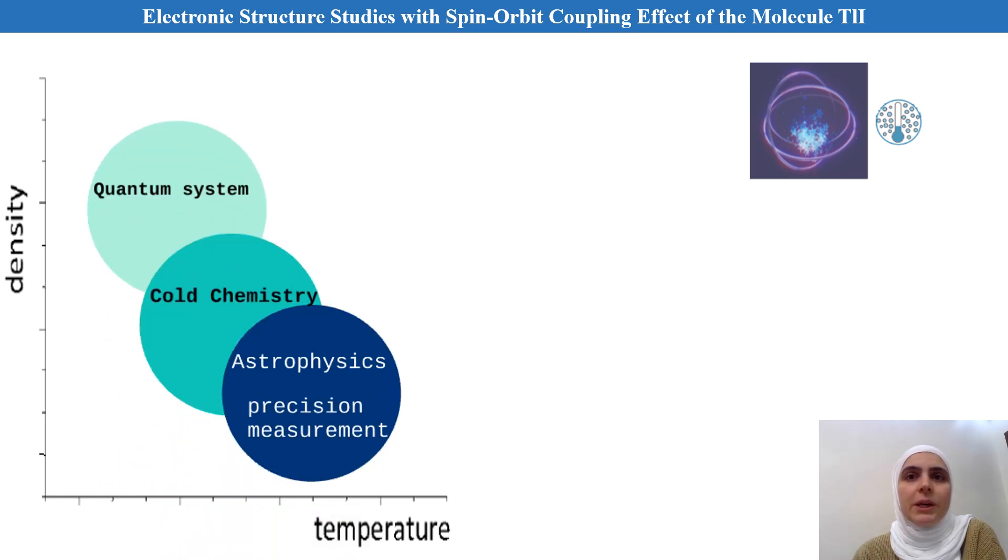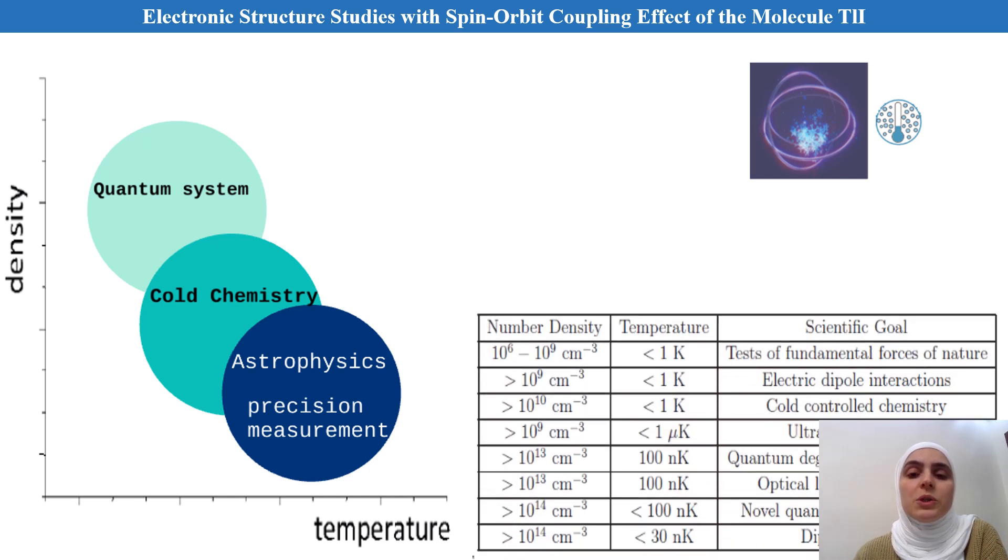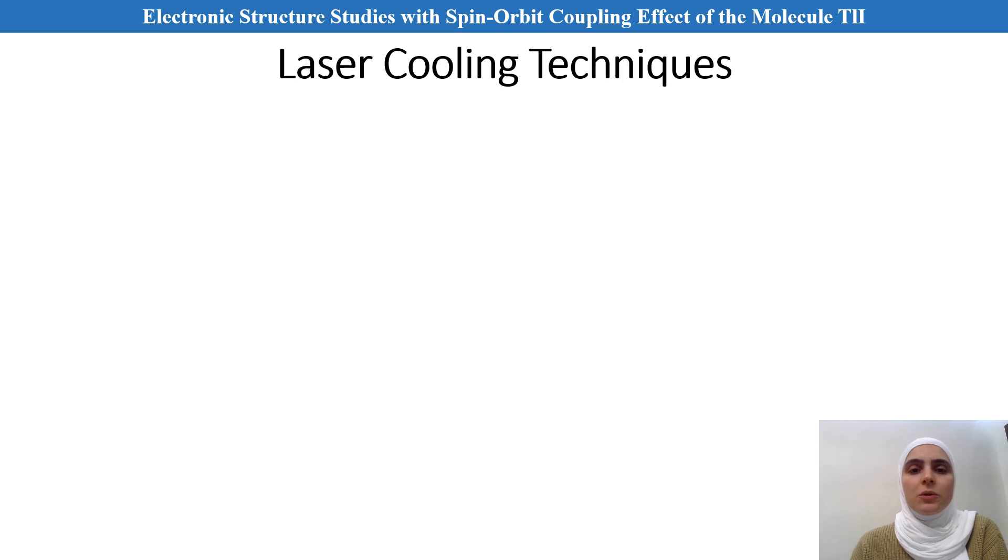As we see here, the applications of cold and ultra-cold molecules to various scientific goals are shown with the required values of number density and temperature, where the temperature is being varied or ranged from 1 Kelvin to nano Kelvin. Preparing such molecules has been a challenging process in recent years.